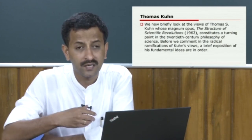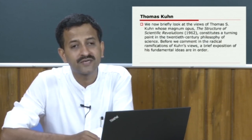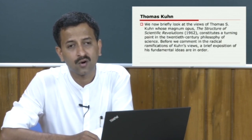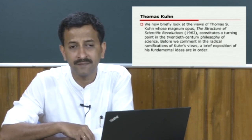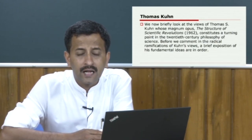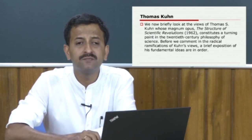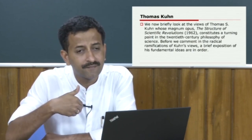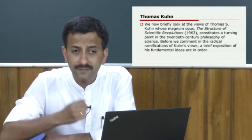Popper immediately tried to delineate the method of science by making a reference to the context of justification, and he refused to talk about the context of discovery. For Popper, it is not possible to provide a rational account of the context of discovery. He always sided with the context of justification. For Popper, science cannot start with observation as inductivists or positivists argued, nor can science start with a hypothesis. For Popper, science must start with a problem.